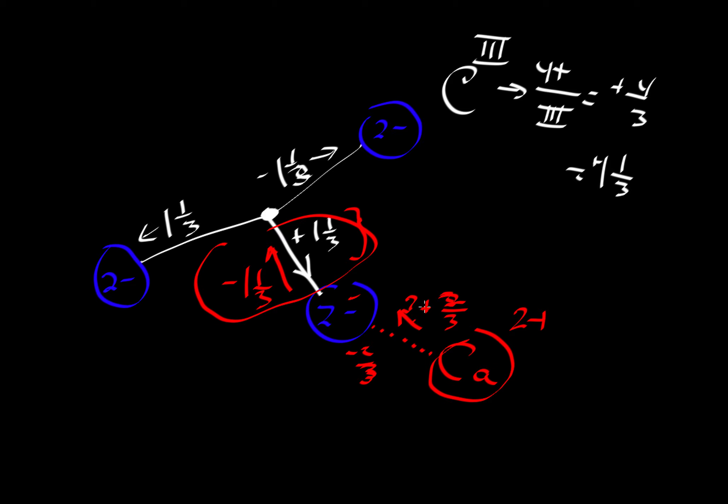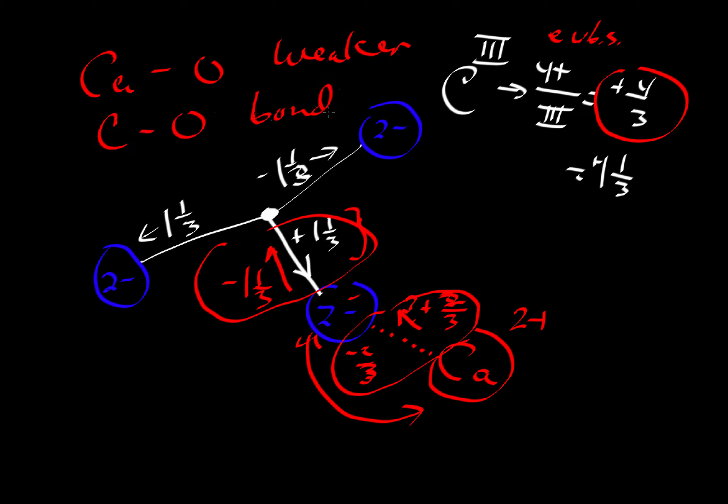But the big issue here is, remember the electrostatic valence bond strength, EVBS, is proportional to this ratio here, the charge divided by the coordination number. With only 2 thirds here for our electrostatic valence bond strength between oxygen and calcium, that means the calcium-oxygen bond is much weaker than the carbon-oxygen bond. So we started out by using this term, anisodesmic, unequal. And this is what we mean - the calcium-oxygen bond is much weaker than the carbon-oxygen bond.